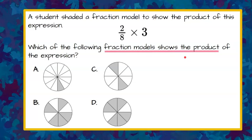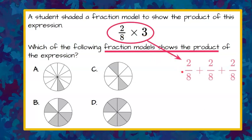We are being asked to find a fraction model from these four choices that models the product of 2 eighths times 3. When we multiply by 3, this represents repeated addition. So one strategy is we can say that 2 eighths multiplied by 3 is equivalent to 2 eighths plus 2 eighths plus 2 eighths. So this means three 2-eighths.